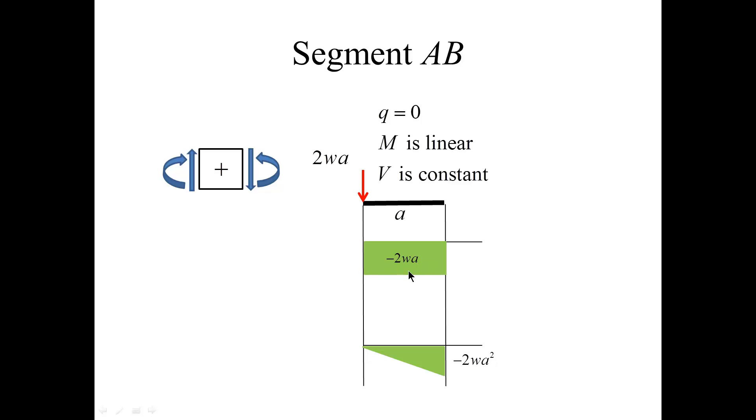Therefore, the force is constant and minus 2Wa persists through the entire length of the segment. For the bending moment diagram, I start with zero simply because there are no couples applied on the left, and then I proceed with the slope minus 2Wa over the length a. It gives me the value for the bending moment minus 2Wa².